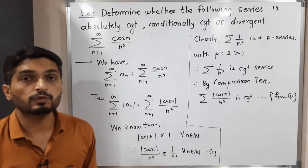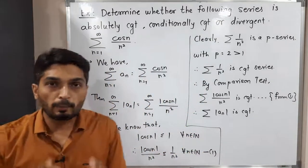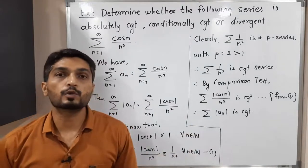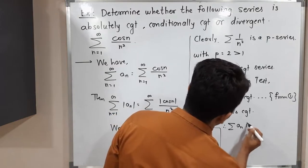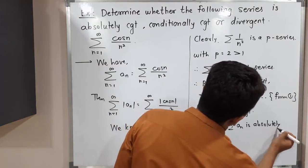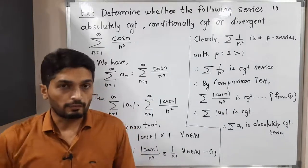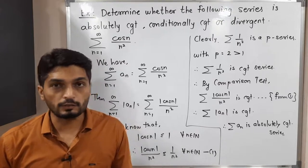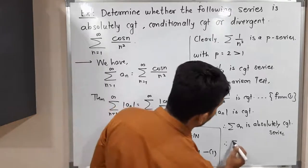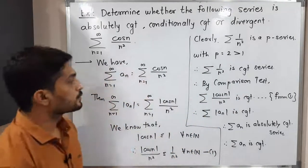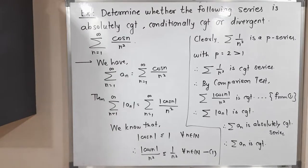Therefore, summation mod a_n is a convergent series. If you apply mod to each term and take the summation, the resultant series is convergent — that means summation a_n is an absolutely convergent series. Since every absolutely convergent series is convergent, therefore summation a_n is also convergent. So the given series is absolutely convergent as well as convergent. Make a screenshot of it.